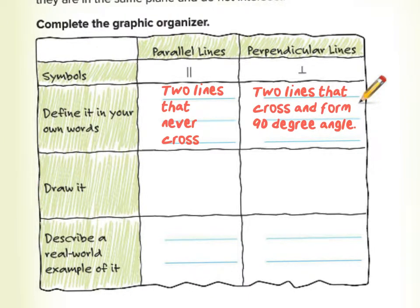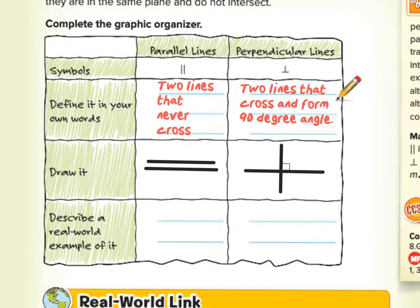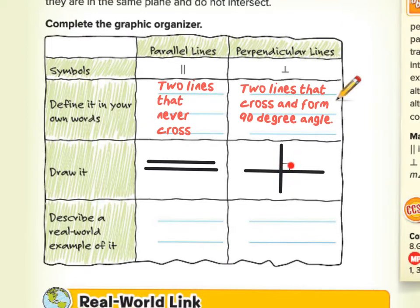If I were to draw two parallel lines, I'd need a ruler to make sure they're completely straight and the angle of either one doesn't change. The two parallel lines would have the same gap between them because they both have the same angle. They could be drawn horizontally, on an angle, or vertically — as long as they both have the same angle and do not touch. For perpendicular lines, they cross and create a perfect 90 degree angle at each place where they intersect. You can see I drew a little box there, which signifies 90 degrees.